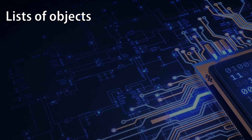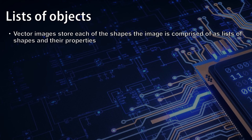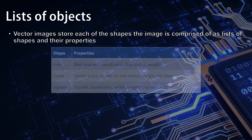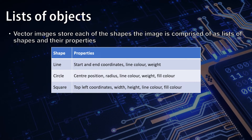Vector images store each of the shapes that the image is comprised of as lists of shapes and their relevant properties. A line, for instance, might have properties such as start and end coordinates, line colour, and the weight of that line. A circle might have to know the centre position with x and y coordinates, the radius, the line colour, the weight of that line, and the fill colour.